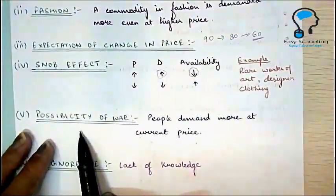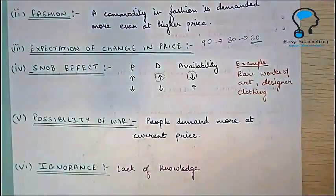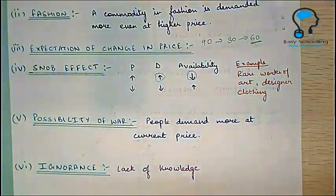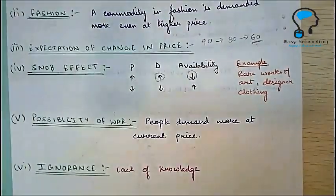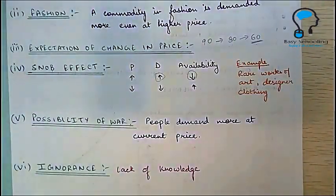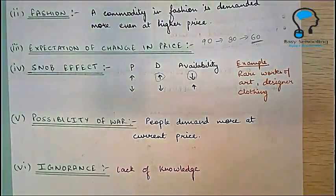Another exception is the possibility of war. If there is a possibility of war in the economy, people will demand more at the current price — whether it is high or low — because they know that later the commodities they need might not be available. Finally, ignorance: some people buy commodities at a higher price simply because they don't know it is sold at a lower price somewhere else.